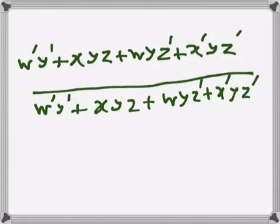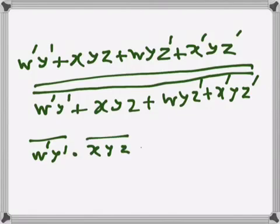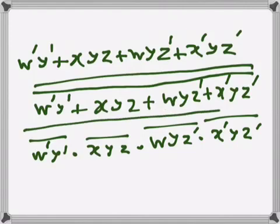I will apply De Morgan's theorem to both sides, and as a result the expression becomes: W' Y' NAND, X Y Z NAND, then Z' NAND, and then X' Y Z' NAND. This is the expression after applying De Morgan's theorem.